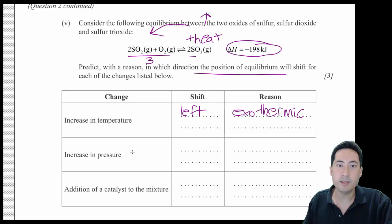Next is the pressure. If you increase the pressure, it's going to push to the side that has the least number of gaseous molecules. So that one's going to go to the right and the reason being there are less moles of gas in the products.